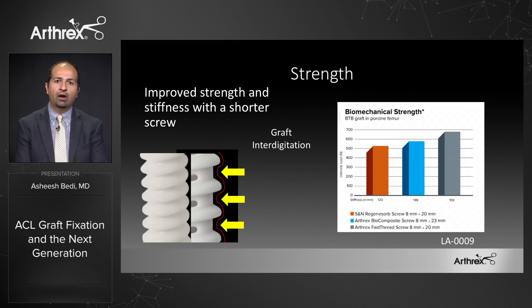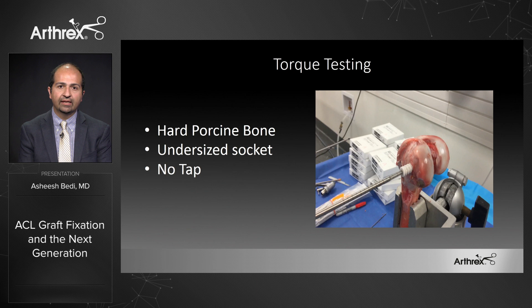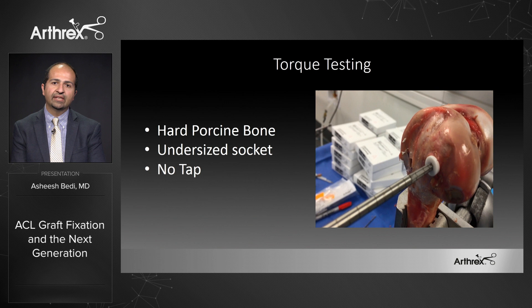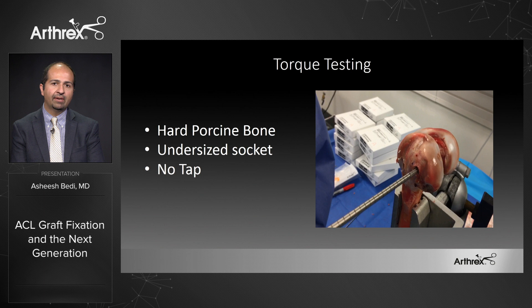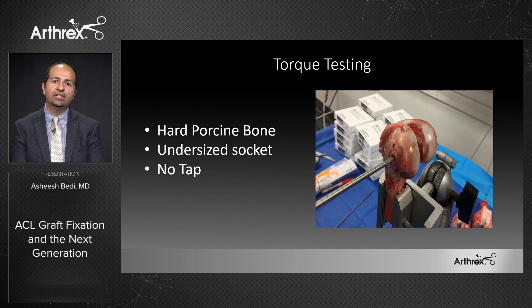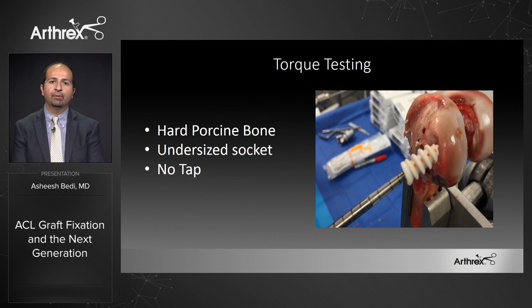Compared to other historical biocomposite screws and even current standards of care on the market, it has improved strength with a shorter length. This likely reflects the difference in pitch and thread design and the opportunity for graft interdigitation, which increases the interface for friction without damage to the graft. In torque testing of the fast thread screw in hard porcine bone — a worst-case scenario with no tapping and an undersized socket — it advances reliably with secure fixation. When removed, the screw has preserved its thread geometry and form to maximize time-zero strength.